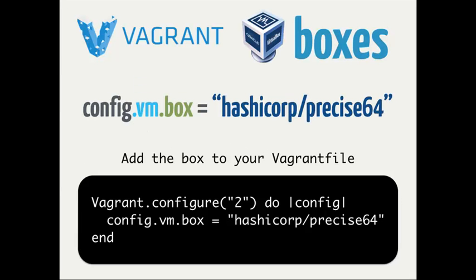We saw how we could add a box via 'vagrant box add,' but we don't necessarily have to do that. If we're deploying from the cloud, we can just add the cloud ID to 'config.vm.box' and when we start up Vagrant it'll automatically download that box. The downside is we have to do that for each project that wants to spin up an instance using that box, and there's some cost to that operation.